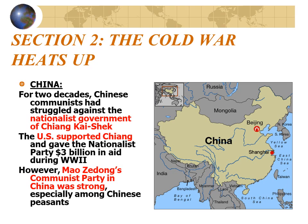Section 2: the Cold War heats up. For two decades, Communist Chinese had struggled against the Nationalist government of Chiang Kai-shek, who were notoriously corrupt and brutal. The U.S. supported Chiang and gave the Nationalist Party $3 billion in aid during World War II, primarily in secret so Stalin would not notice support for the enemy of fellow communist Mao Zedong and the Communist Party in China. Because of the overwhelming popularity of the Communist Party and the brutality of the Nationalists, Mao was especially popular among Chinese peasants and would eventually win the Chinese Civil War.